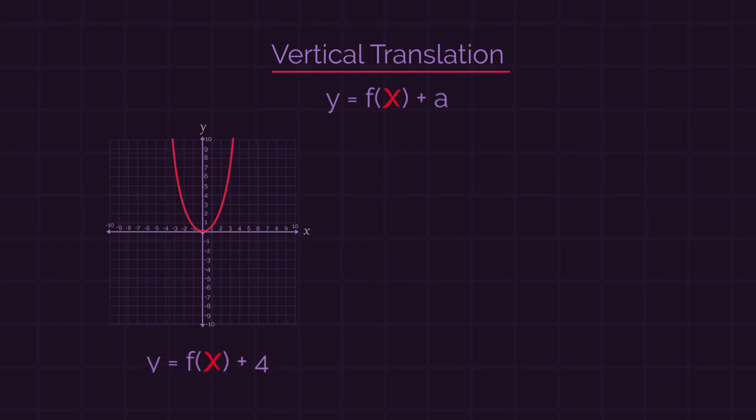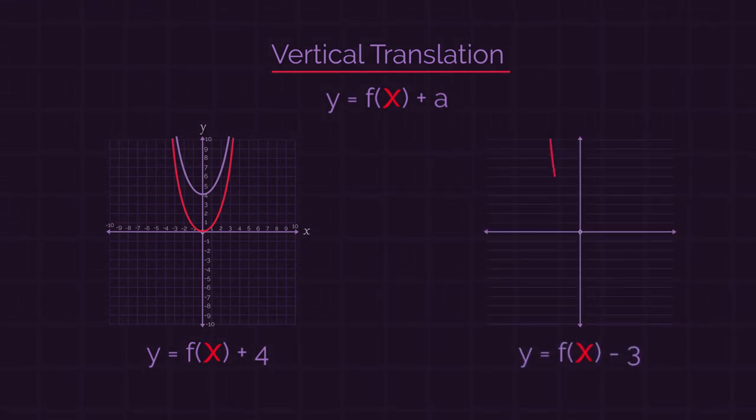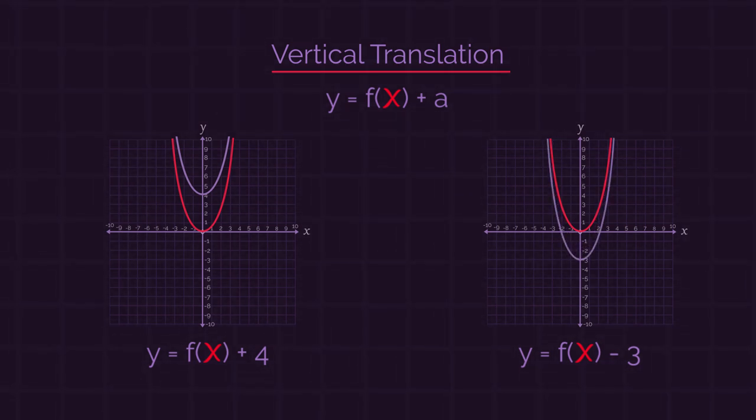So vertical translations. Bearing in mind that adding four shifts the graph up four, what do you think this transformation would do to the curve? Did you think shift the curve down by three? So for vertical translations, we add the number to the whole function.